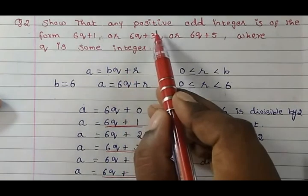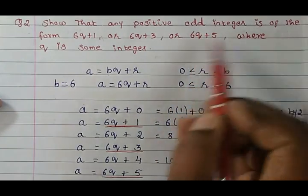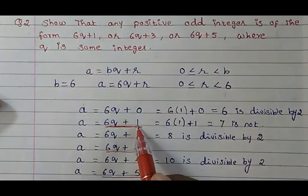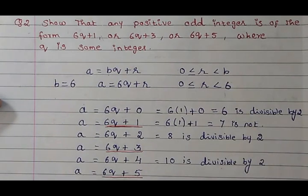So we have already proved that any positive odd integer is of the form 6q+1, 6q+3, 6q+5.